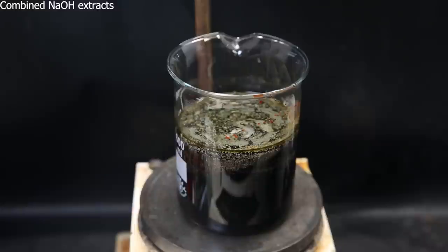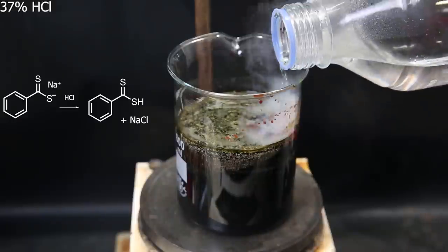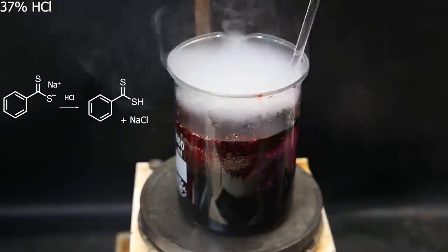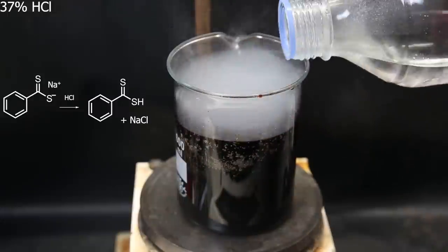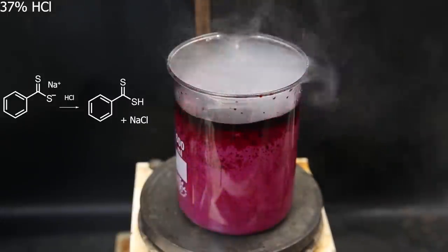Now I have the combined extracts, and some solid potential impurities are floating around. Now to return the diethylbenzoic acid back to its protonated form, I acidify the water again by adding concentrated hydrochloric acid, until the diethylbenzoic acid separates out.